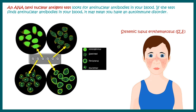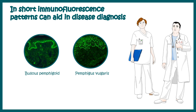By looking at the immunofluorescence pattern, a doctor can understand whether it is positive or not. There are several characteristic patterns from which several interpretations can be made. Similarly, characteristic immunofluorescence patterns exist for bullous pemphigoid and pemphigus vulgaris. In short, immunofluorescence patterns can aid in disease diagnosis.